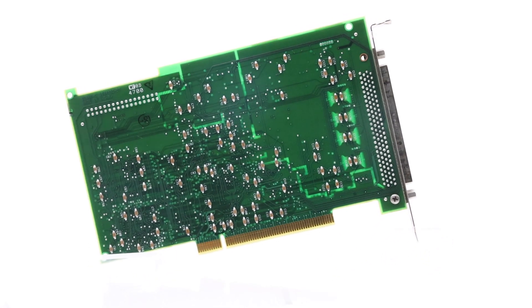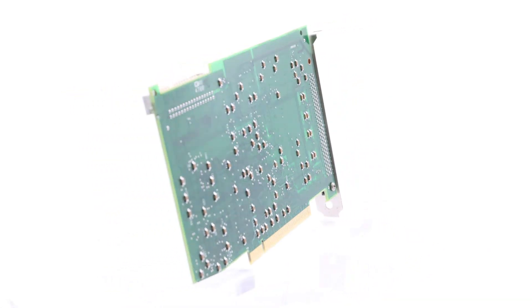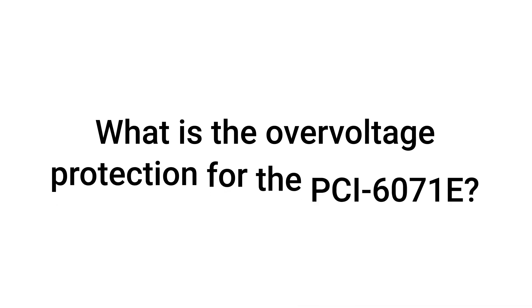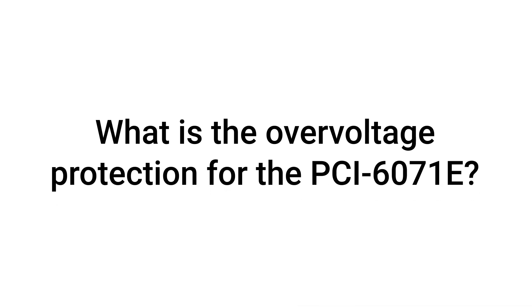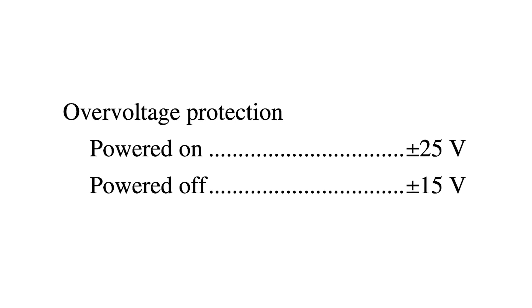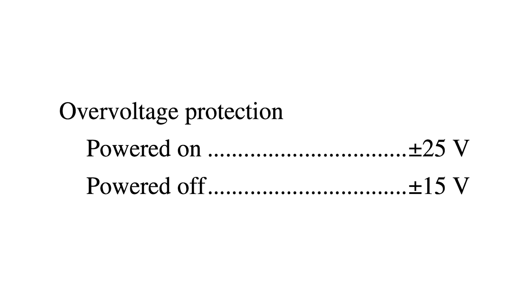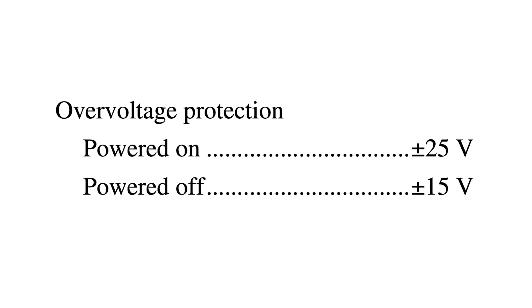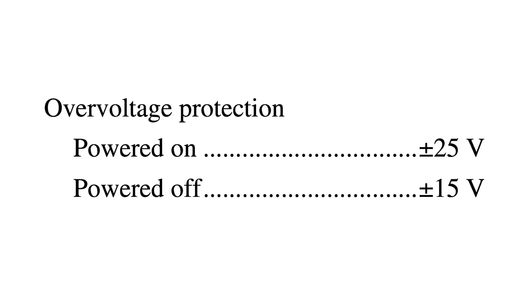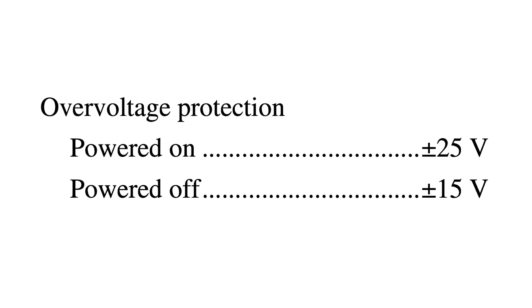What is the overvoltage protection for the PCI-6071E? The overvoltage protection for the PCI-6071E is ±25 volts while powered on, and ±15 volts while powered off.